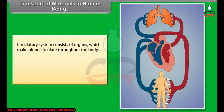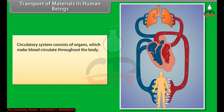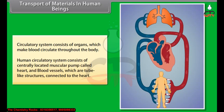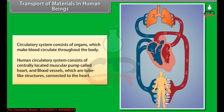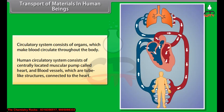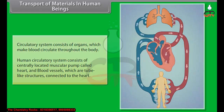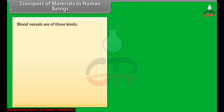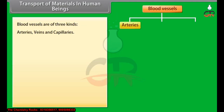The circulatory system consists of organs which make blood circulate throughout the body. The human circulatory system consists of a centrally located muscular pump called the heart and blood vessels, which are tube-like structures connected to the heart. Blood vessels are of three kinds: arteries, veins and capillaries.